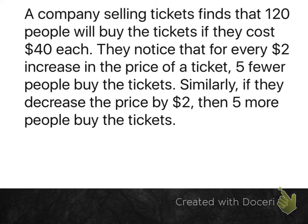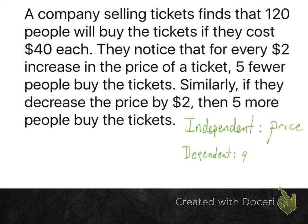This problem is about a company selling tickets, and there are two important things: the price they sell the ticket at and the number of tickets they sell. The price is the independent variable and the number of tickets — the quantity — is the dependent variable. The company can choose what price to sell tickets for, and the quantity depends on that price.